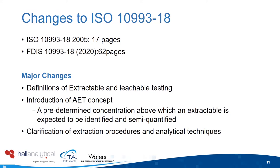ISO 10993 part 18 changed in January this year and has grown significantly — from vague information running to 17 pages to now 62 pages long. It now introduces definitions of extractable and leachable testing and introduces the concept of the Analytical Evaluation Threshold, or AET — a predetermined concentration above which an extractable is expected to be identified and semi-quantified. Importantly, the AET is purely an identification threshold, not a safety threshold. The updated standard also covers much more on extraction procedures, duration and analytical techniques.